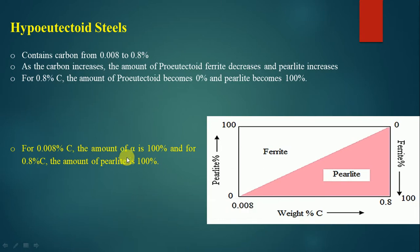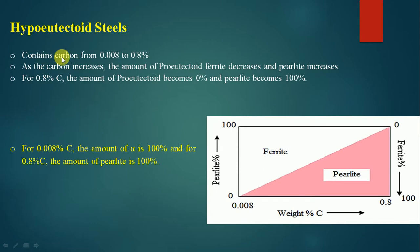Hypo-eutectoid steel is defined as the steel which contains carbon lesser than the eutectoid point composition. The eutectoid point composition is 0.8 percentage of carbon, so hypo-eutectoid steel contains carbon from 0.008 to 0.8 percent.